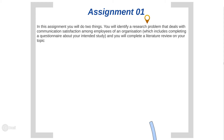First, you will have to identify a research problem that deals with communication satisfaction among employees of an organization of your choice. This part of the assignment will have to contain a questionnaire that covers the nitty-gritty aspects of your study. Then you will have to complete a literature review of your topic. So generally, there are three things you will focus on in this first assignment, and this video will focus on each of those three things.